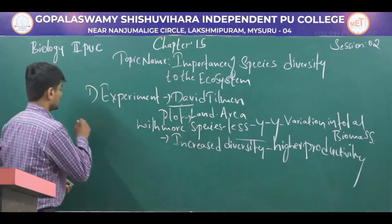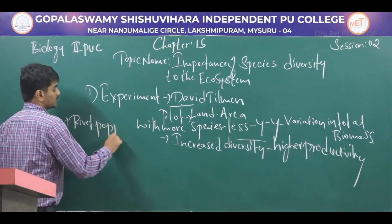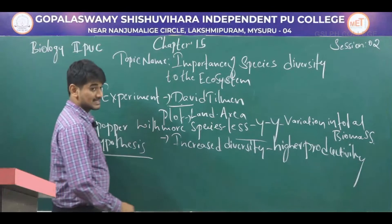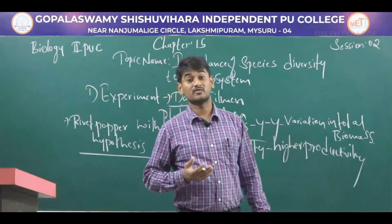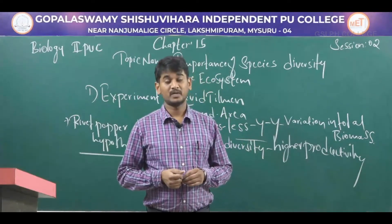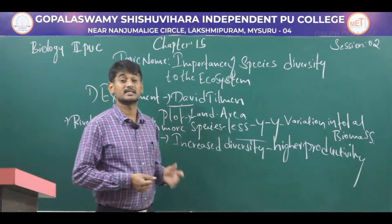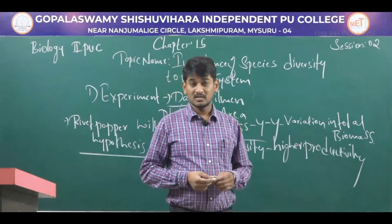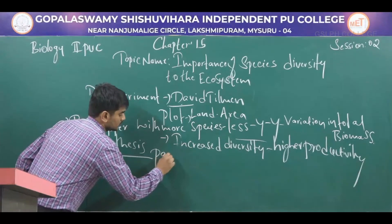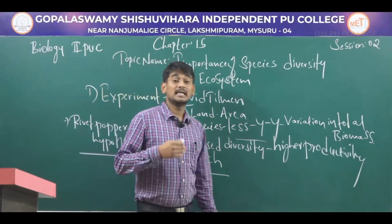The next scientist proposed the Rivet Popper hypothesis. The Rivet Popper hypothesis is an analogy used to understand the importance of biodiversity. This hypothesis was proposed by Stanford ecologist Paul Ehrlich. He compared the total ecosystem to an airplane.